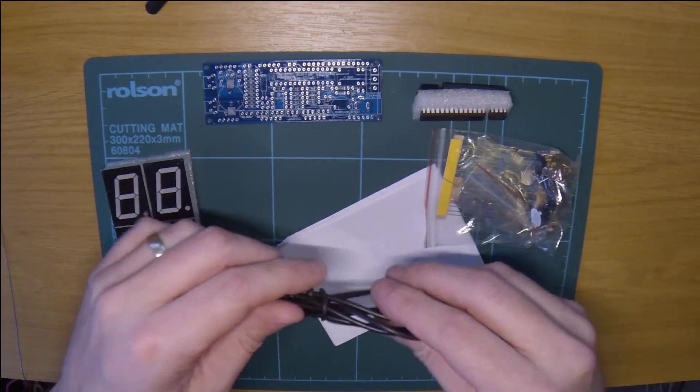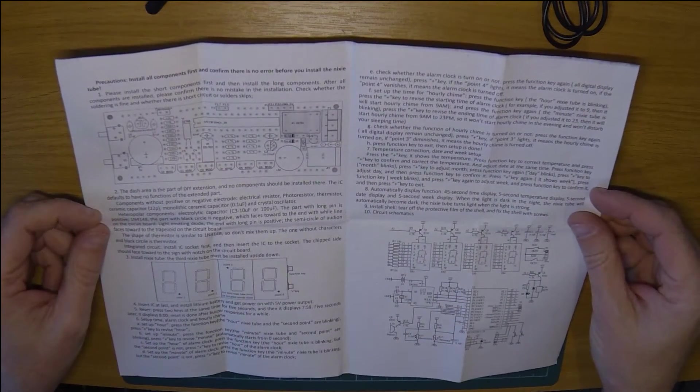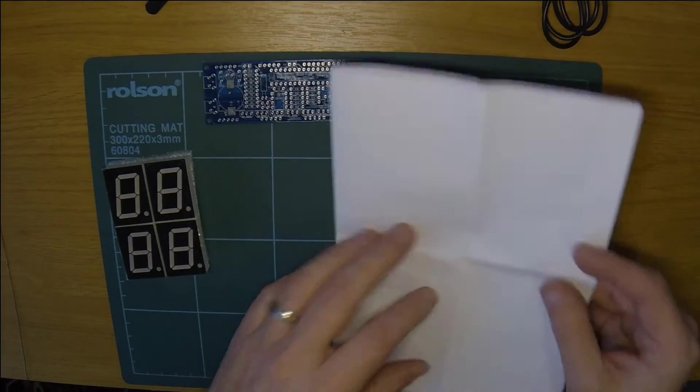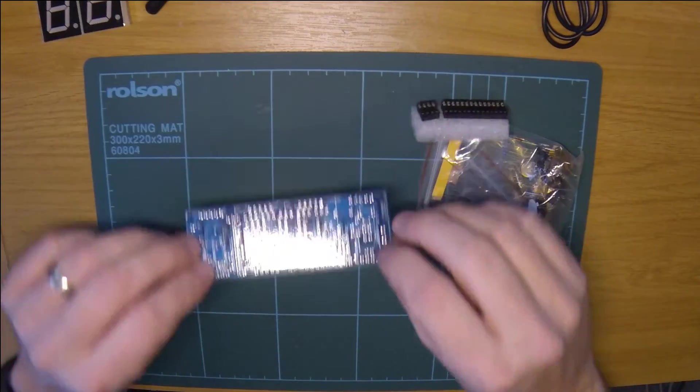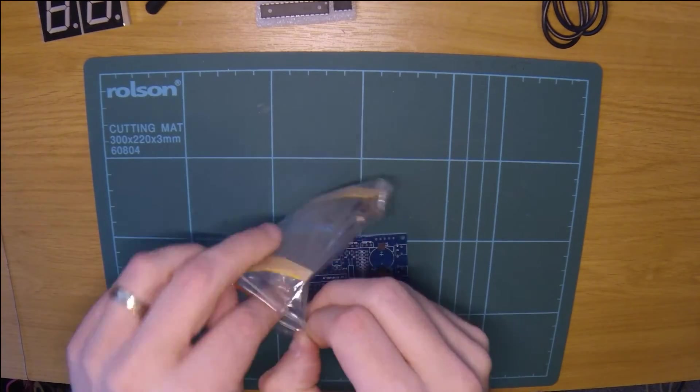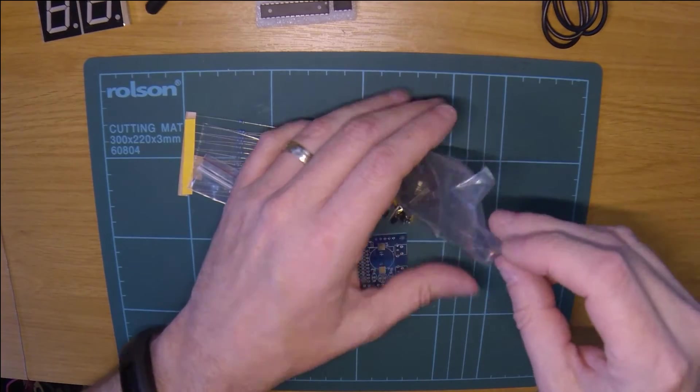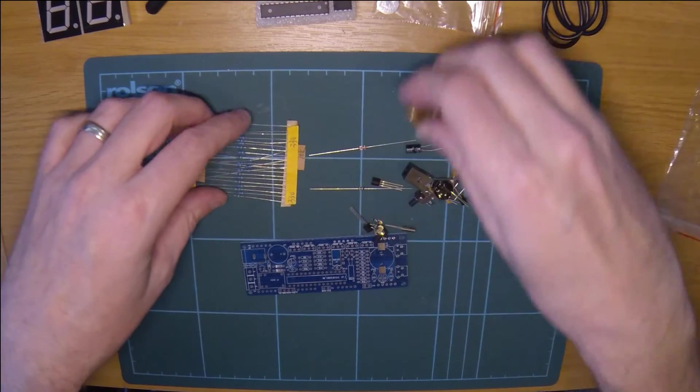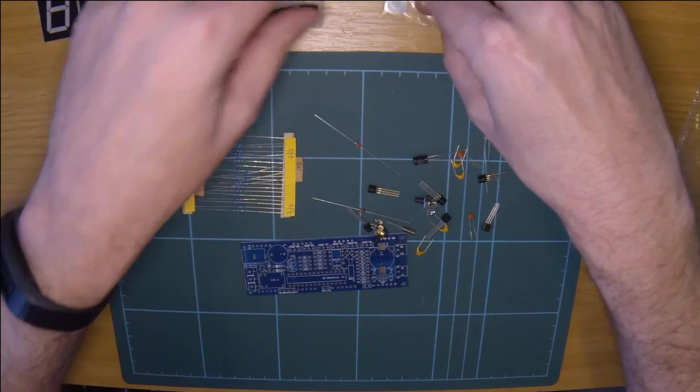This one isn't surface mount or anything like that. This is quite a straightforward one to build. The instructions are obviously translation, and you have to read it about six times to understand it. But as this is the second one I've done, I'm pretty sure I know where I'm going with it in the beginning. But we will keep that handy. There's the display. Tiny little board. And all the bits.